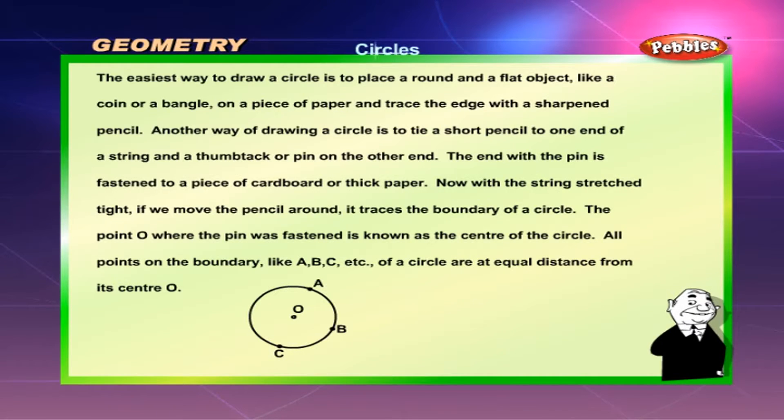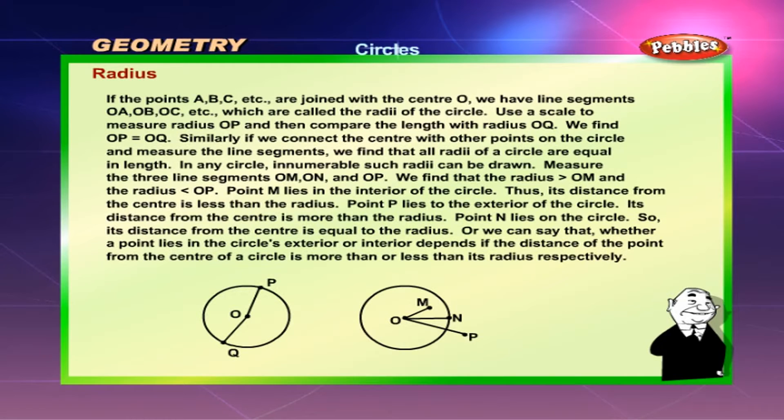B, C etc. of a circle are at equal distance from its center O. If the points A, B, C etc. are joined with the center O, we have line segments OA, OB, OC, etc. which are called the radii of the circle.